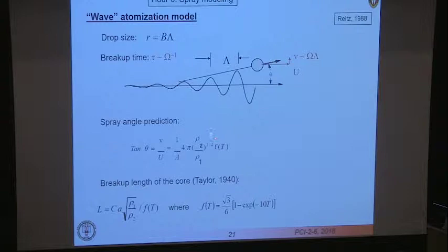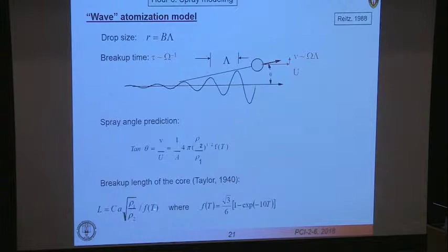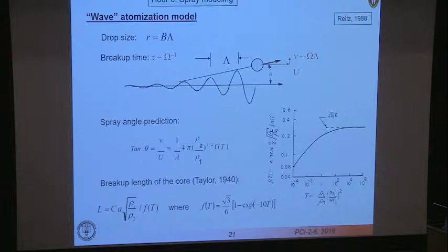This predicts the spray angle: the radial velocity divided by the axial velocity equals the square root of the density ratio times a function of the Taylor number. You can also predict the core length of the jet — how long it takes to convert injected liquid into droplets — because you know the mass associated with each formed droplet. The jet length is proportional to the jet radius times the liquid-to-gas density ratio divided by this Taylor function, which is essentially a constant at high Taylor numbers.